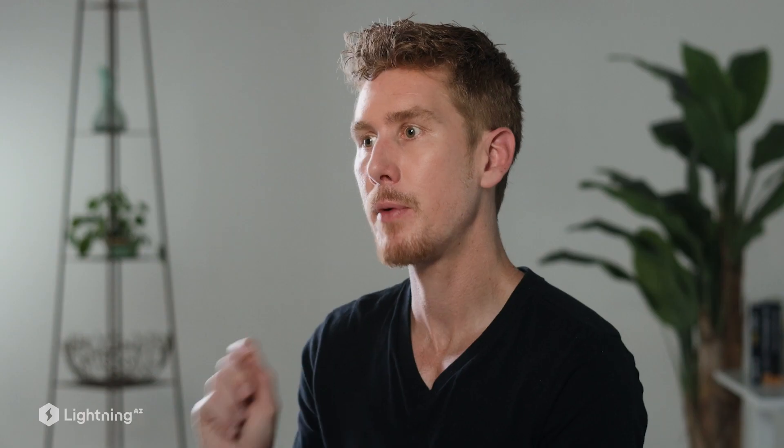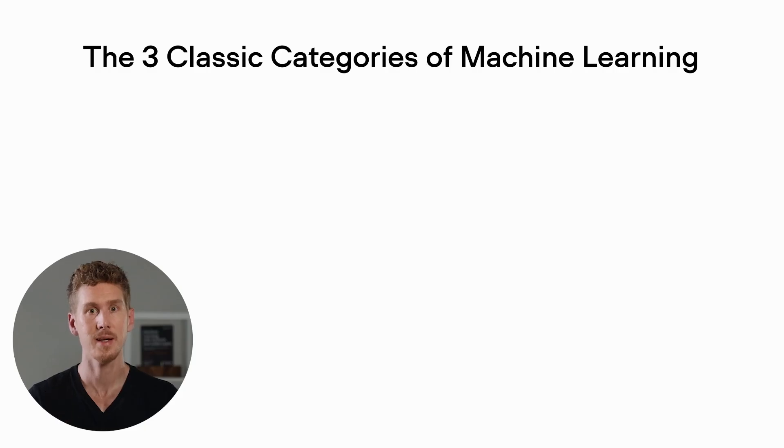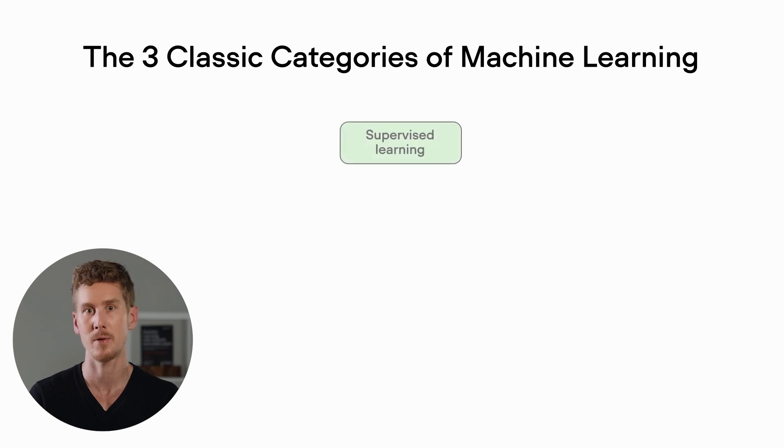Let's now take a look at the three classic categories of machine learning. It's useful to know these terms because if you read textbooks or take other classes, these will be the three terms commonly used in the literature. The first classic category is supervised learning.